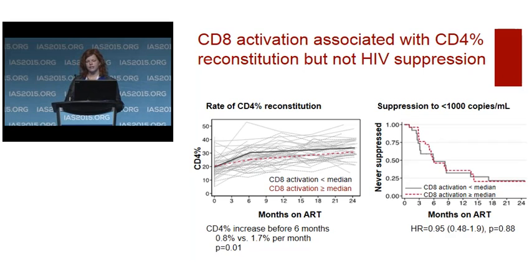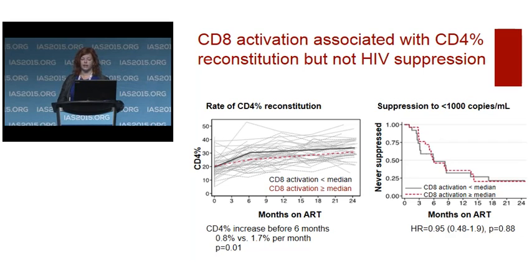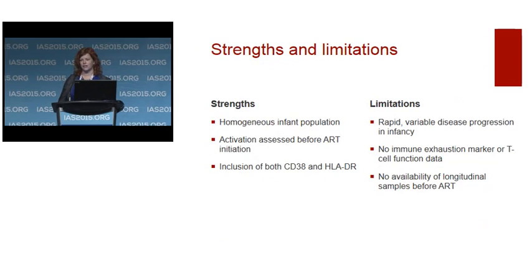In conclusion, CD8 T cell activation varied widely among infants and did not appear to be driven by viral load or associated with disease severity. Infants with less than 5% CD8 activation were at high risk of mortality, with very high viral loads and advanced disease — suggesting that lack of immune activation in the presence of active infection may indicate an inability to respond to infection. Finally, CD8 T cell activation greater than median was associated with CD4 reconstitution but not viral load suppression on ART, showing that neither extreme in CD8 T cell activation was beneficial in these children.